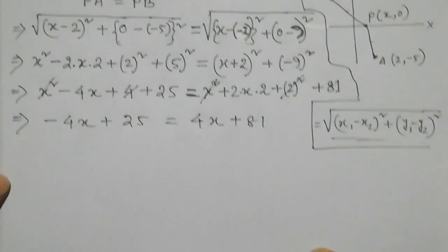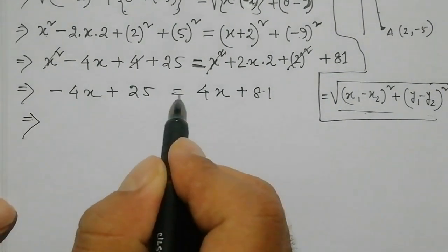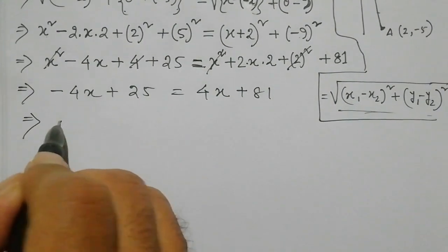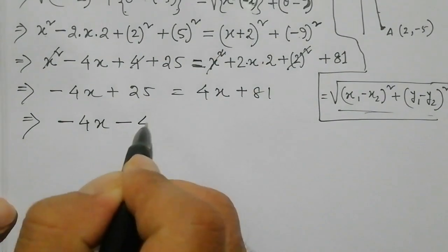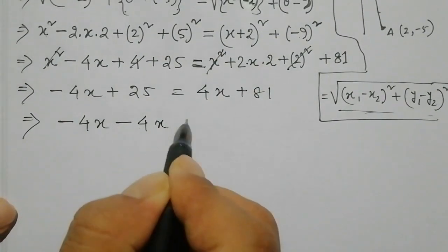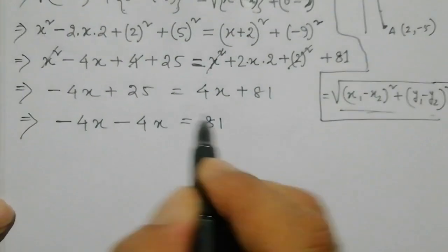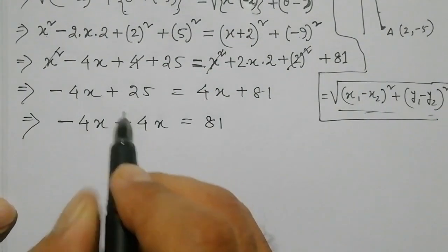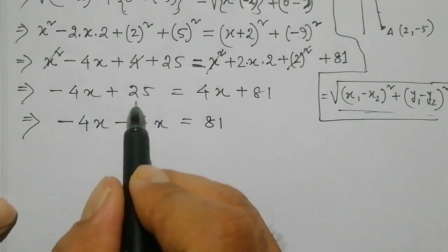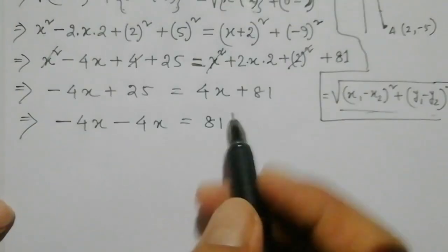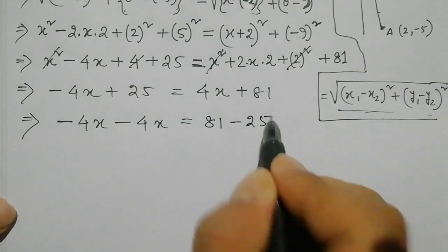So x is equal to left side, and I will say minus 4x, and I will say right side 81, and I will say constant number, and plus 25 is equal to left side, and I will say minus 25.